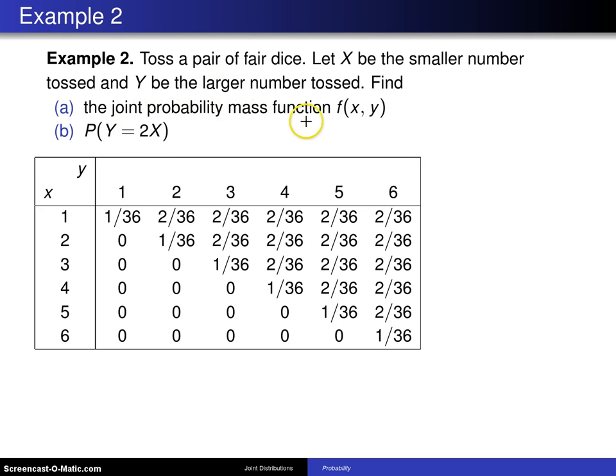Well, since we're looking at joint probability mass functions, it must be the case that x and y are discrete, and they are in this case. So in this table,